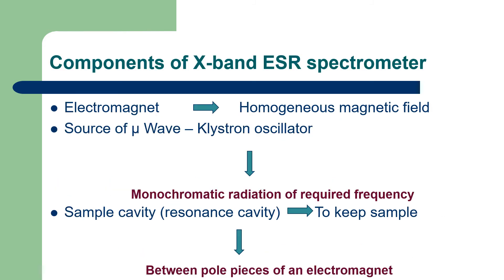Now, let us consider the different components of X-band ESR spectrometer. The first important component is an electromagnet that should produce homogeneous magnetic field. Second one is a source of microwave. Usually, we use klystron oscillator as the source. Klystron oscillator will produce monochromatic radiation of required frequency.